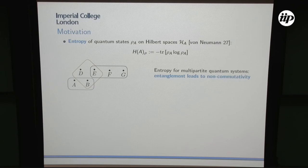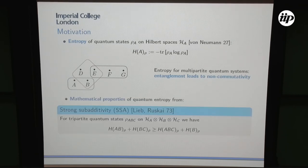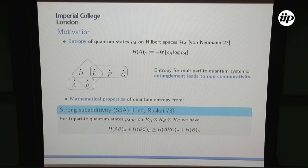Mathematically, this leads to the non-commutativity of the underlying quantum states. So if you look at the reduced states on overlapping subsystems A, B, and B, E, they won't commute. This makes things very difficult when we want to talk about quantum entropy. Basically, everything we know about quantum entropy can be deduced from one inequality: the so-called strong subadditivity by Lieb and Ruskai. It tells us that for a tripartite state A, B, C, the sum of the entropy of AB and BC is never smaller than the entropy of the whole state plus the entropy of the intersection.